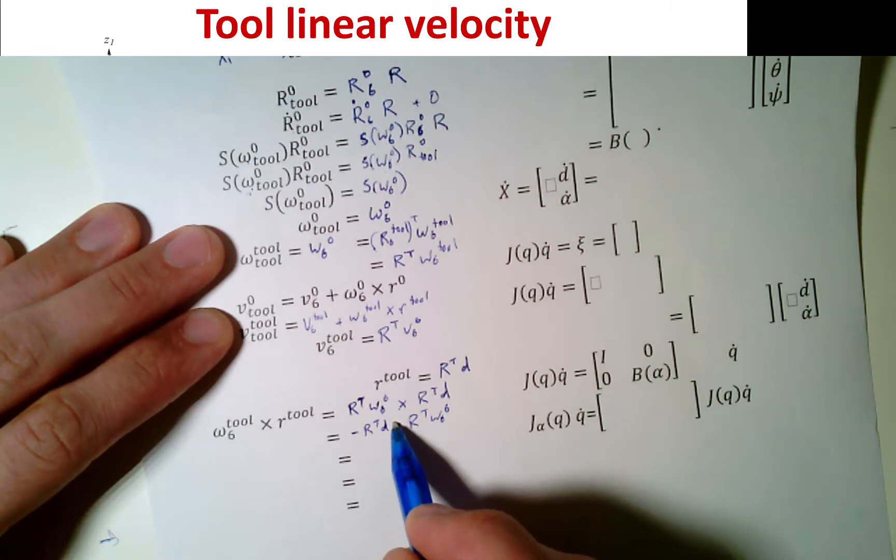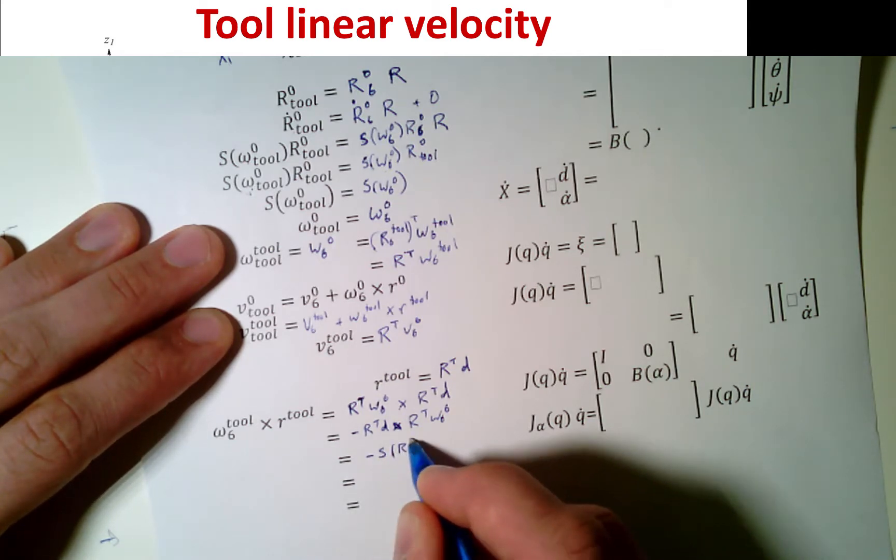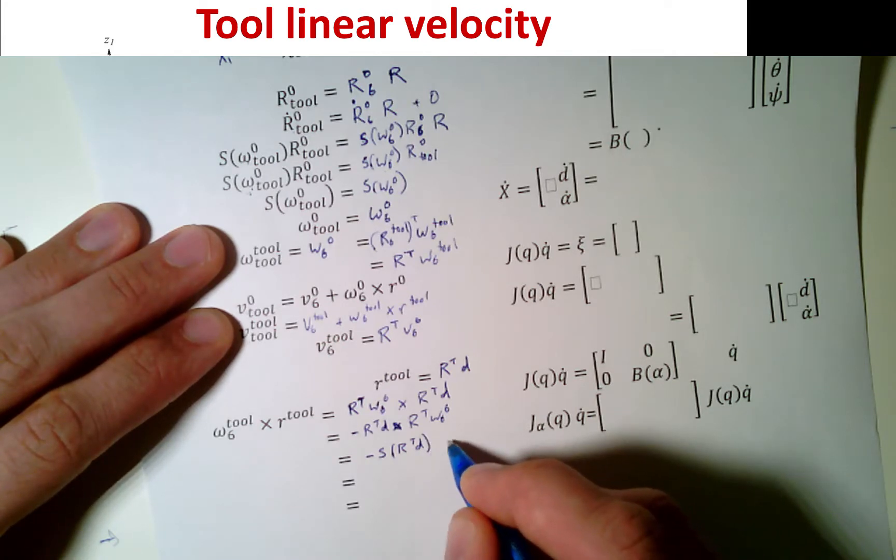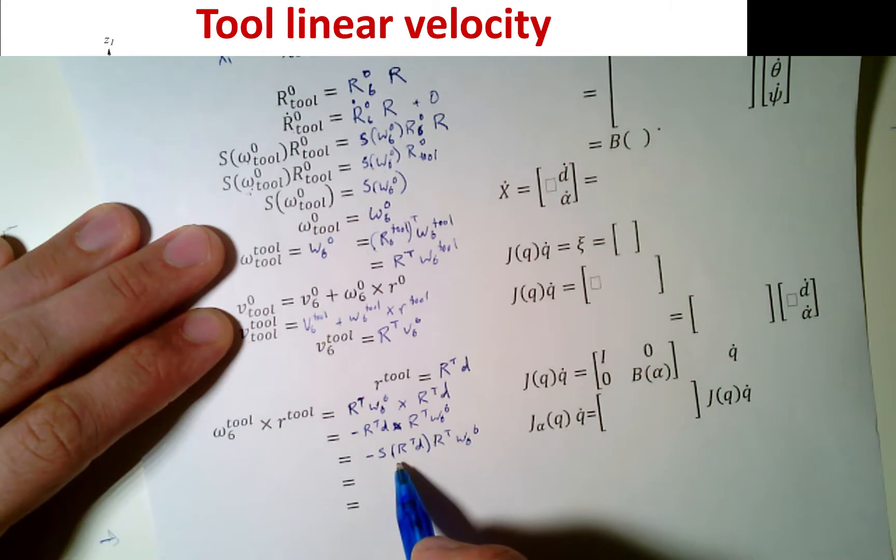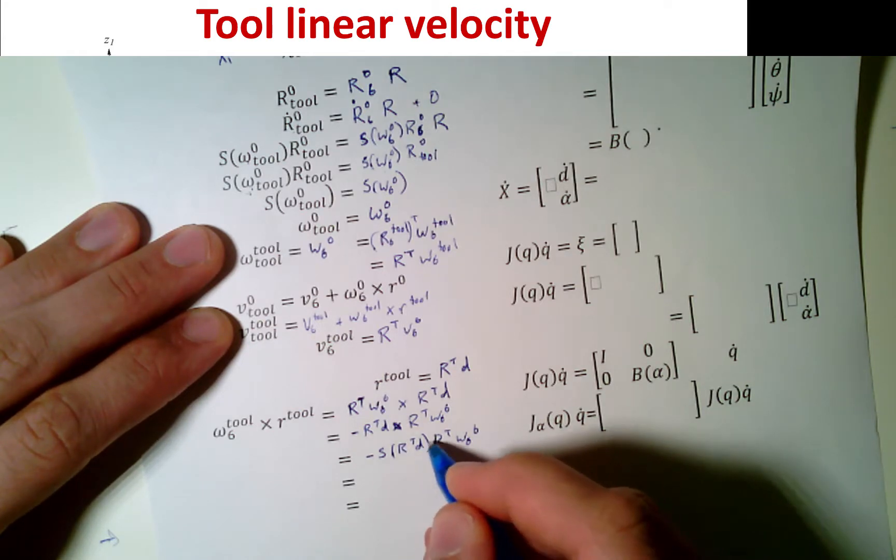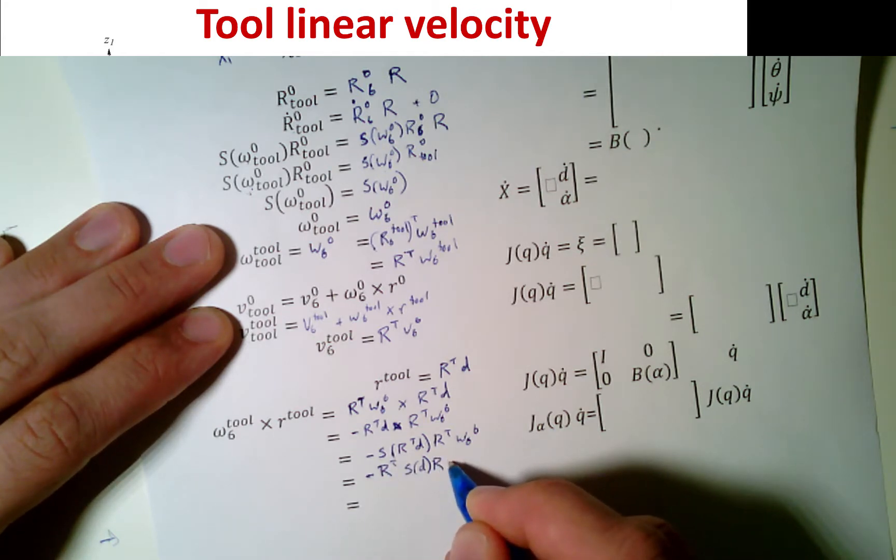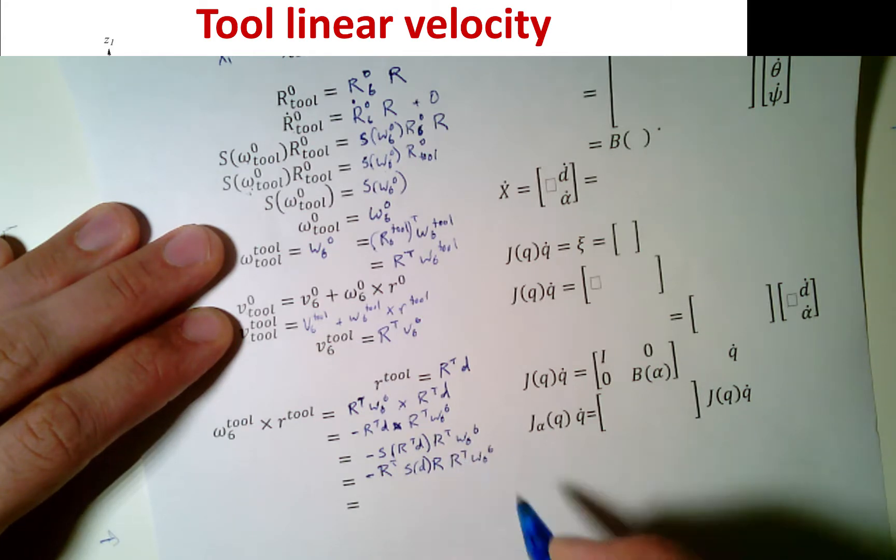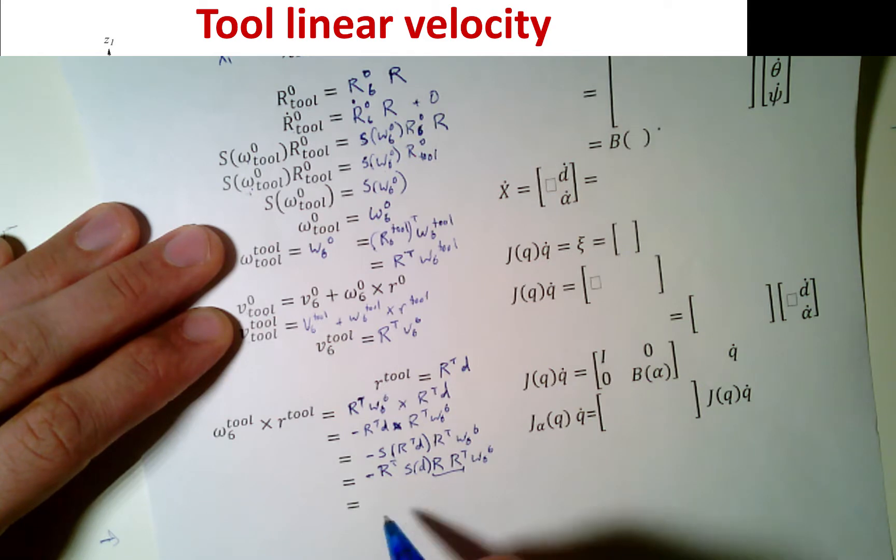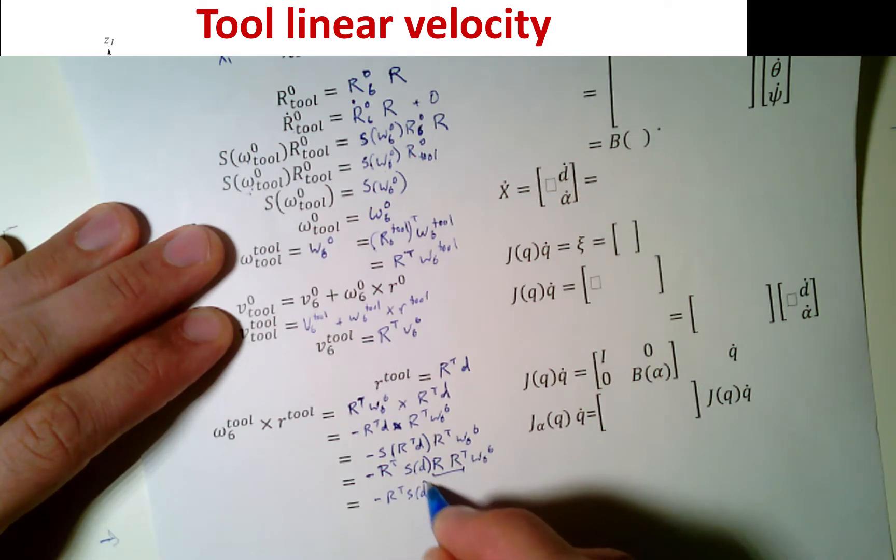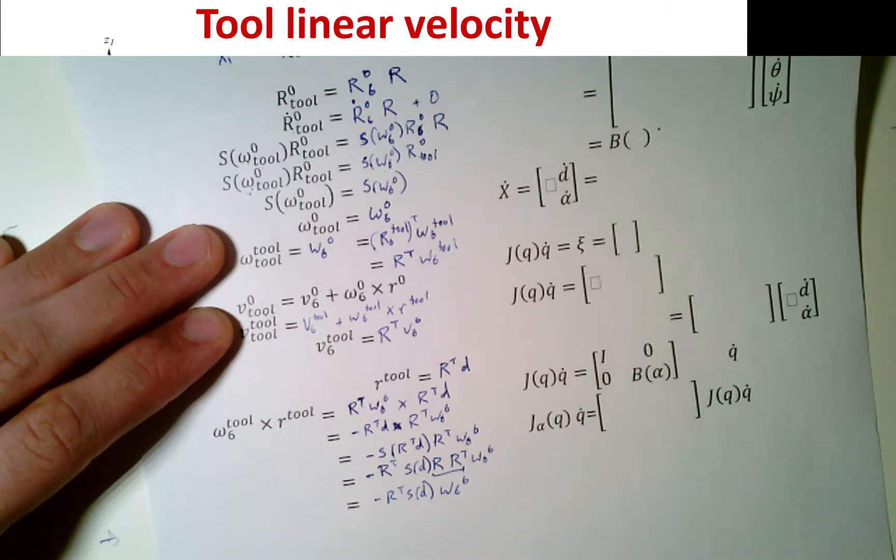And so now the next thing that we need to know is what is this R tool. For this R tool, it's just that D offset that we had previously, but we've got to rotate the frame that it's in. So it's RT times D, which means that our omega 6 in the tool frame cross R tool in the tool frame, it's just a rotation. RT times omega 6 in the 6 cross product with RT in frame D. Remember, we can switch the order of a cross product by taking the negation of the second one. Let's do that. Negative RTD cross RT omega 6 in the 6. This cross product, remember the cross product generalizes the skew symmetric. That's going to be negative S of RTD times R transpose omega 6 in 6.